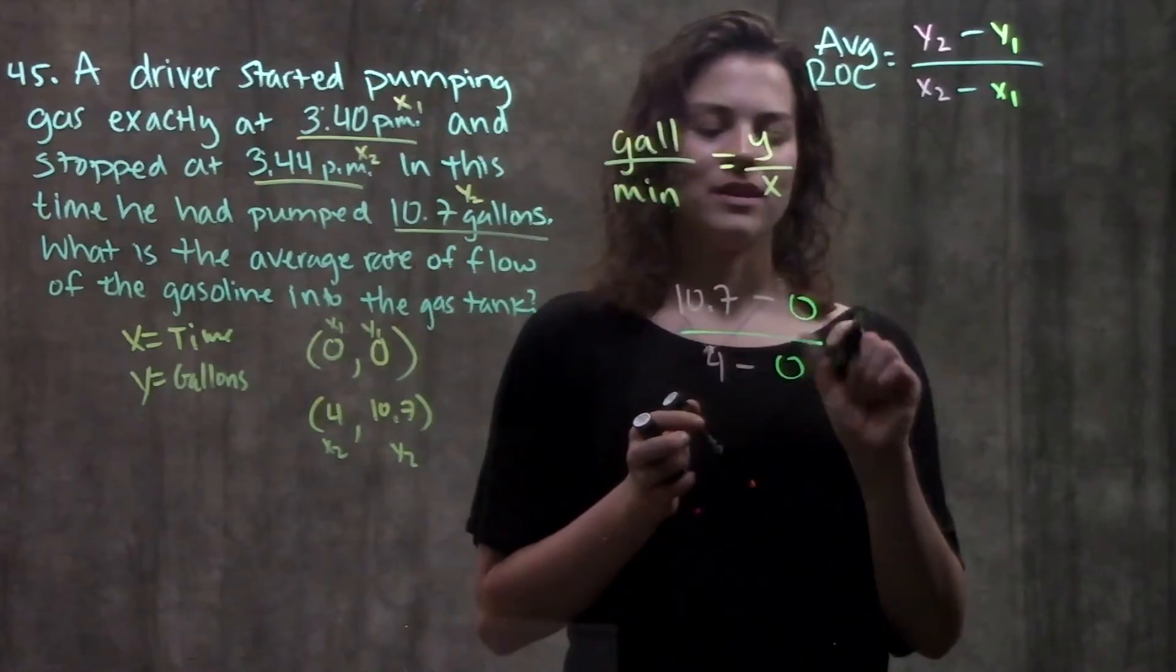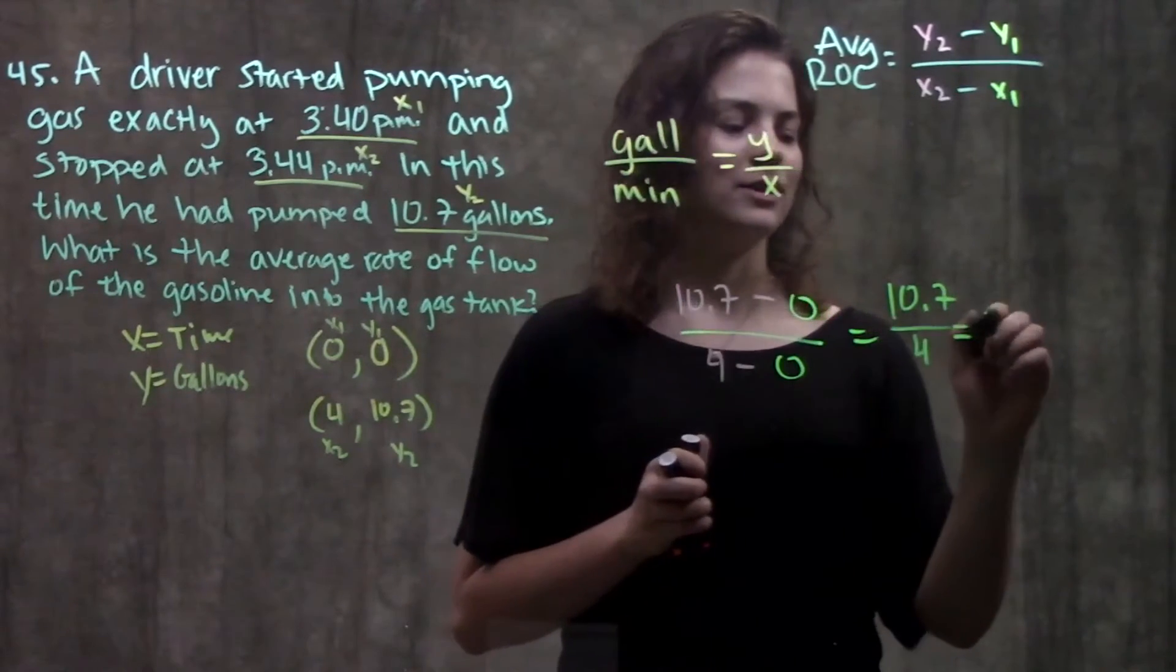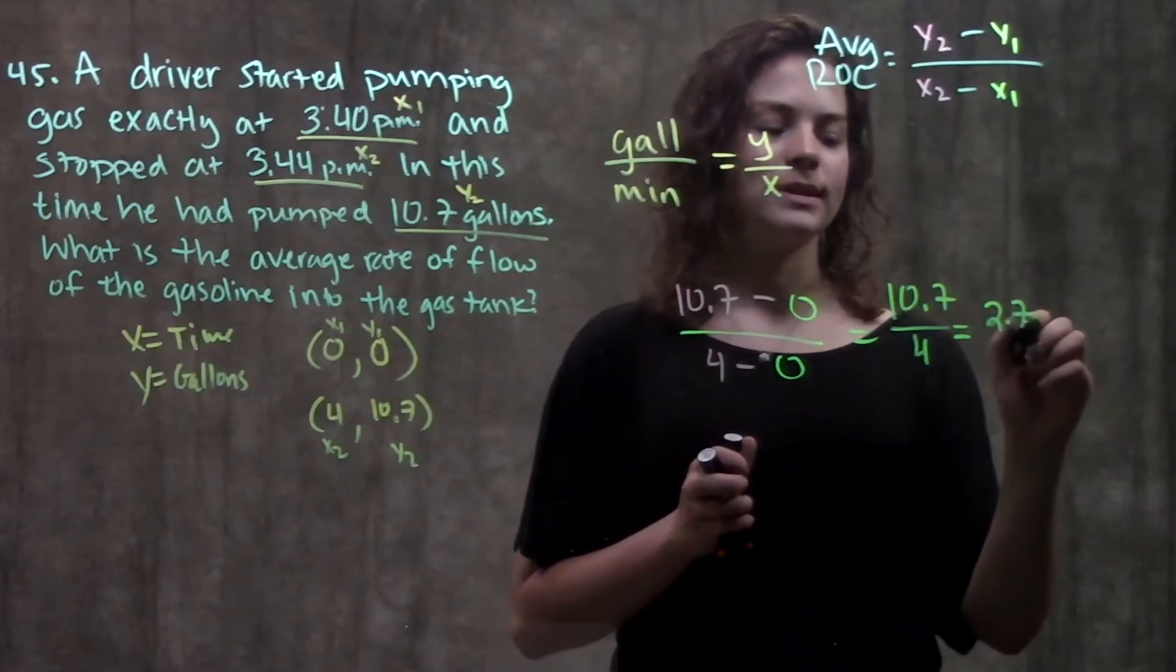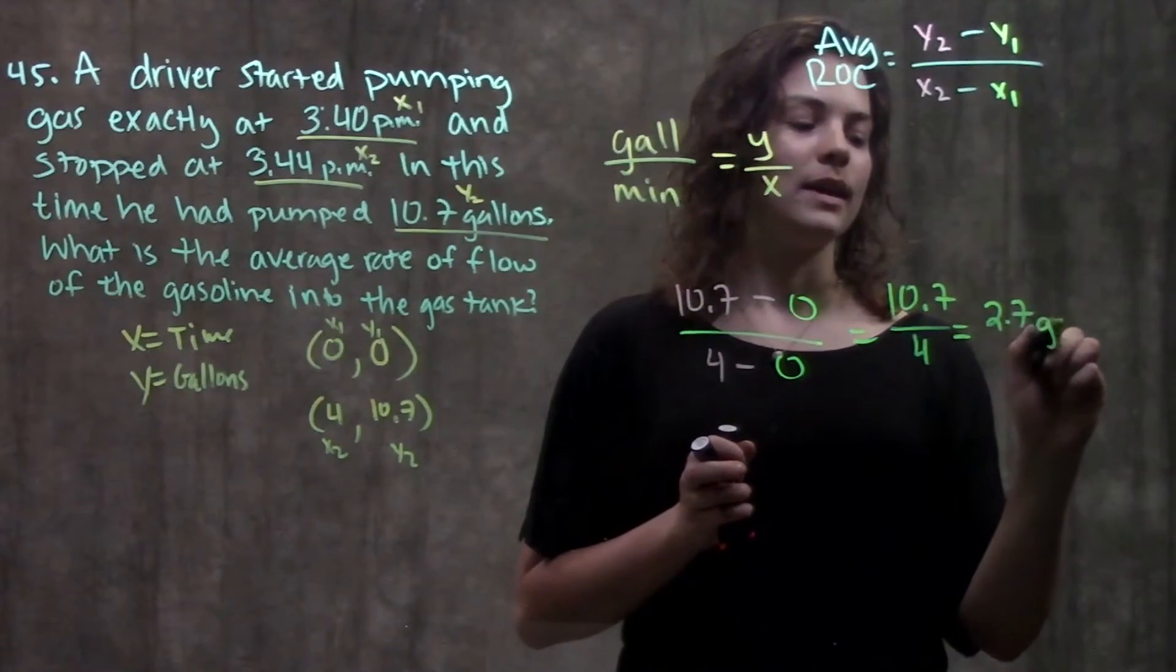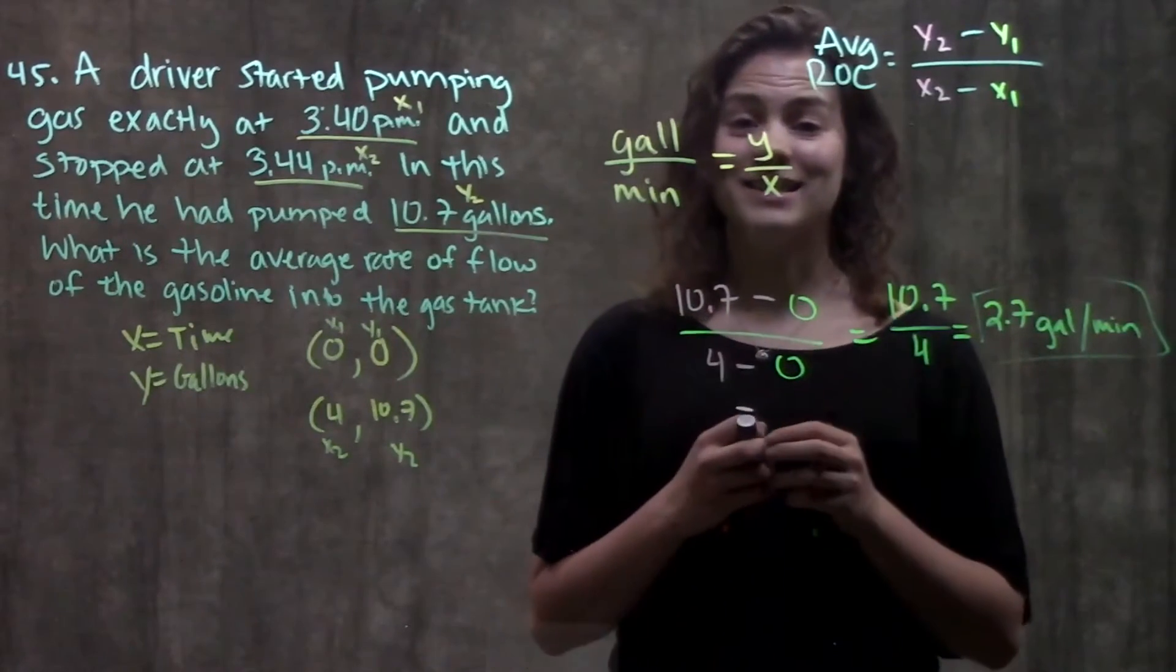And solving this out, you'll get 10.7 over four. Put that in your calculator, and you'll get that this equals about 2.7, remember your units, gallons per minute. And that's it for this problem.